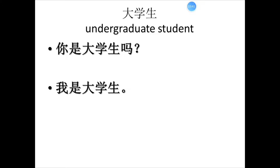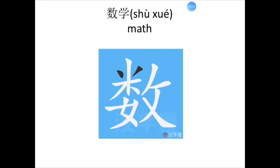Next word. 请你跟我一起读。 Please read after me. 大学生. 大学生 means 'undergraduate student.' Let's read the following sentences: 您是大学生吗? — Are you an undergraduate student? 我是大学生. — Yes, I am an undergraduate student.